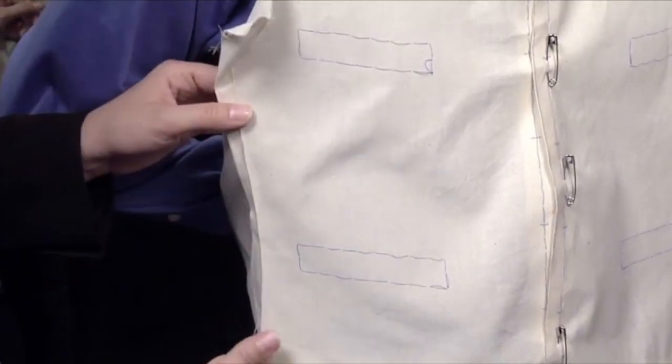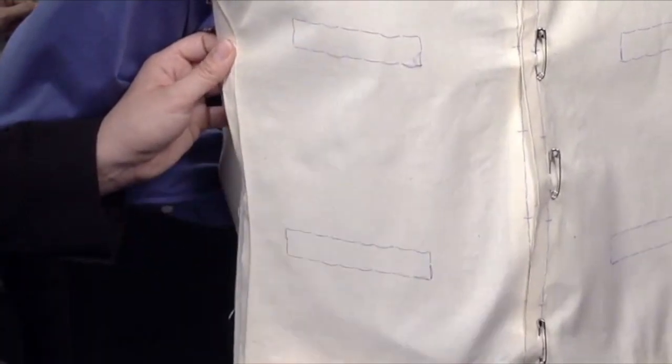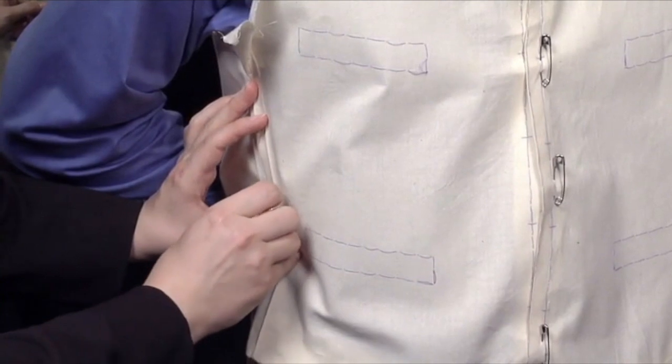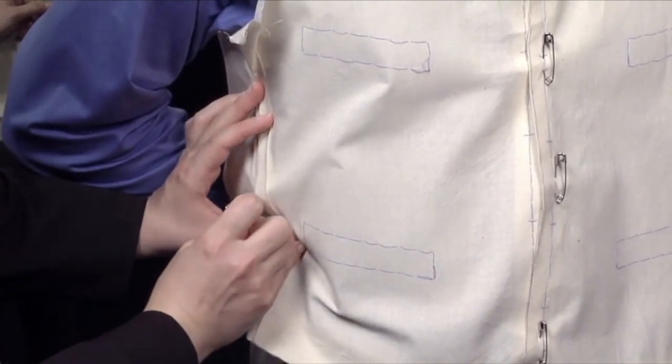To address the side seam, fold the vest front over the vest back seam allowance. Smooth out any drag lines and allow the fabric to lie smoothly. Let the fabric tell you where it needs to go.